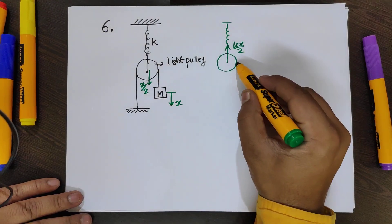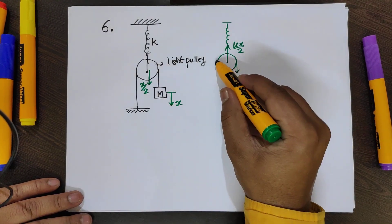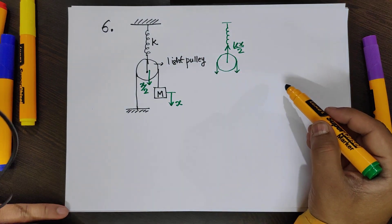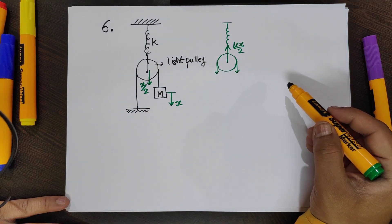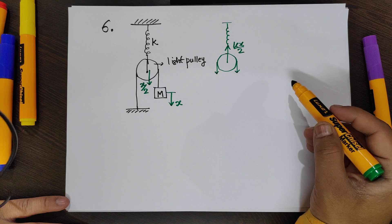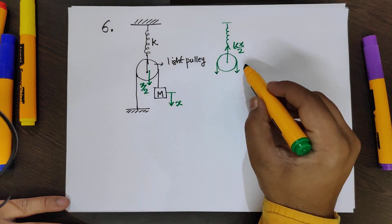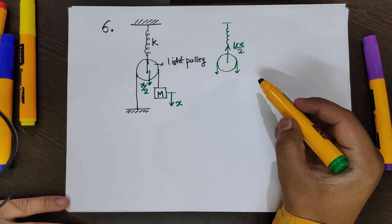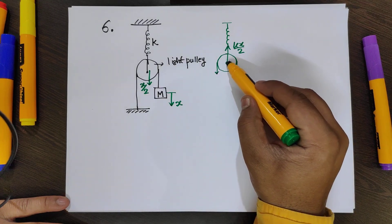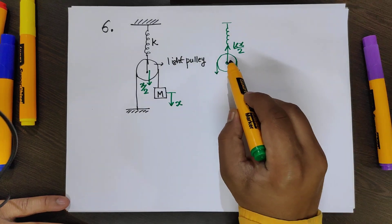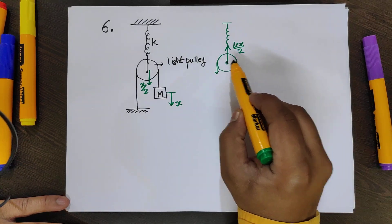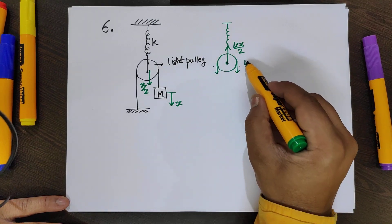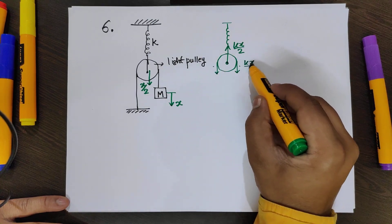Since we have taken a light pulley, the net force on the pulley should be zero. The net torque is also zero on the pulley. Taking torque from the center, these two forces have to be equal, and since the net force is zero, each of these forces is equal to kx/4.